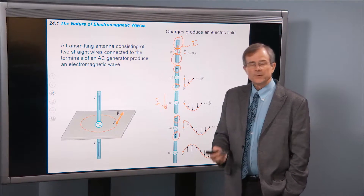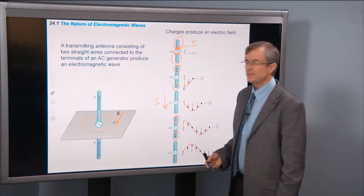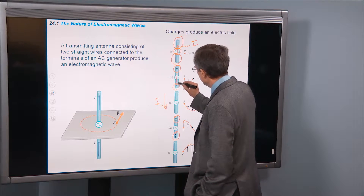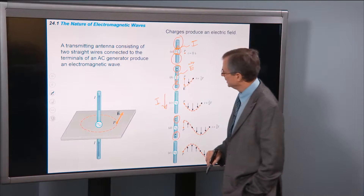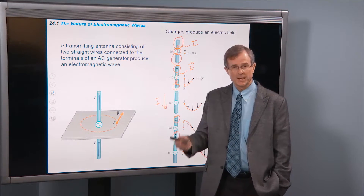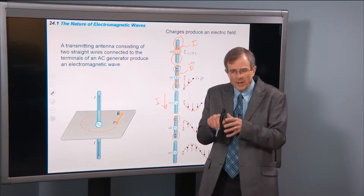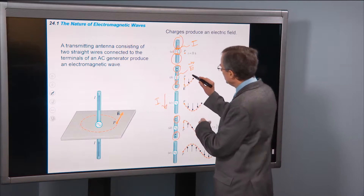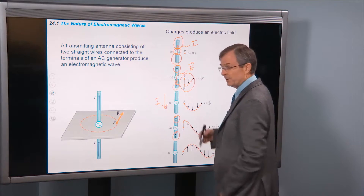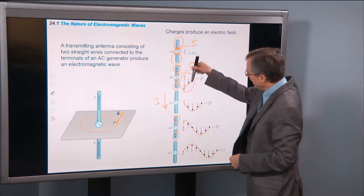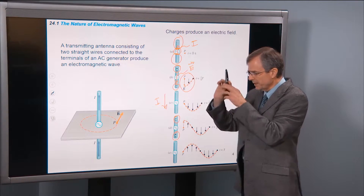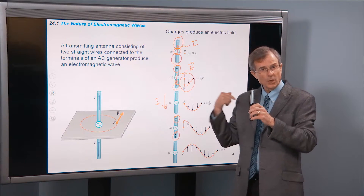The negative charges accumulate on the bottom side. But if it's an AC source, the current is going to reverse its direction at some point, eventually driving positive charge down to the bottom end and negative charge to the top end. Those charges create an electric field that begins at positive charges and ends at negative charges. That electric field doesn't only exist in the wire — it's broadcast out away from the wire, which is actually called a broadcasting antenna.